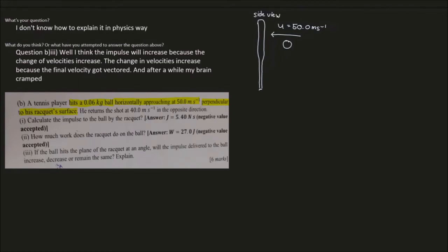The dashed line I draw here represents the racket surface, and it's perpendicular to the direction of motion of the ball. The tennis player will return the shot, so this ball will go back in the opposite direction with a speed of 40 meters per second. If initially the ball moves to the left, finally it should be going to the right, with a final velocity of 40.0 meters per second.